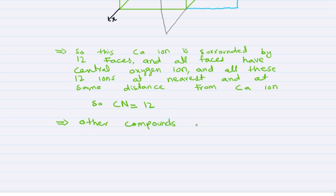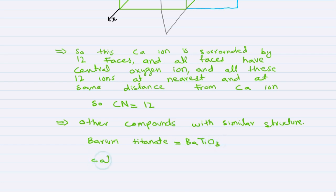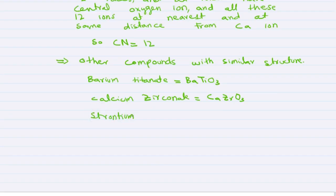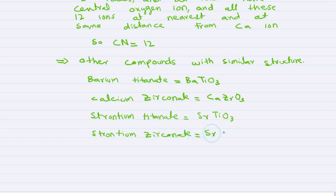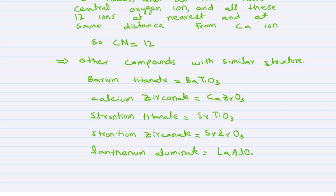Other compounds with a similar perovskite structure include barium titanate BaTiO3, calcium zirconate CaZrO3, strontium titanate SrTiO3, strontium zirconate SrZrO3, and lanthanum aluminate LaAlO3.